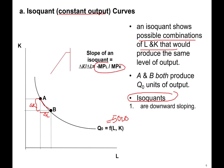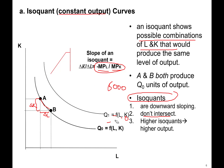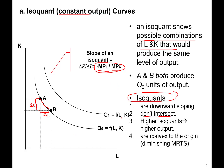The slope of an isoquant is going to be the negative of the marginal product of labor divided by the marginal product of capital. Isoquants, if we draw all of them, do not intersect at all — there are an infinite number of them. Higher isoquants correspond to higher output. And they are convex to the origin — they look like a bowl facing away from the origin — which is what we call the diminishing marginal rate of technical substitution.